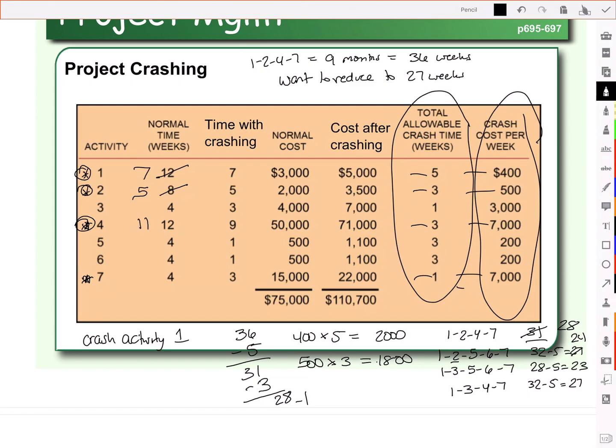So we're going to take it down to 11. That 1 week is going to cost us $7,000. And now we're at the 27 weeks that the client wanted.